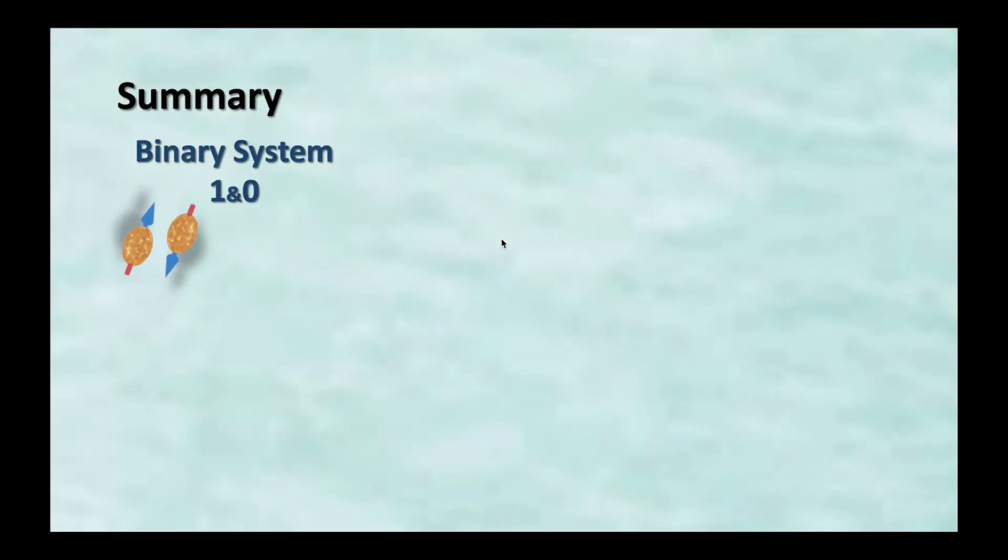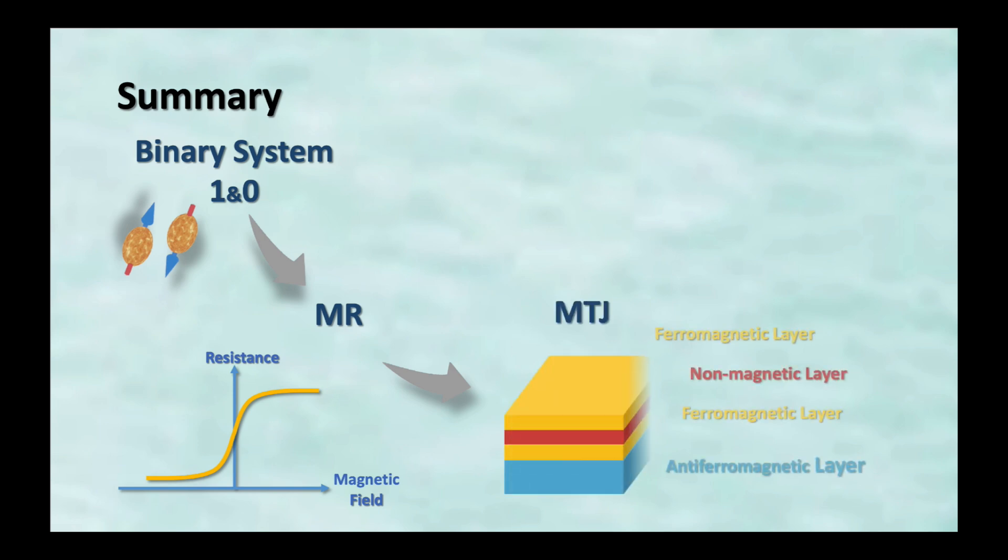And, let's start our summary part. First, we start from the binary system. And, then we go to the spin direction difference. We can have the resistance difference. And, then we go to the MTJ structure. And, then we talk about how to read and write in MRAM. And, we also explain the mechanism of STT and SOT.